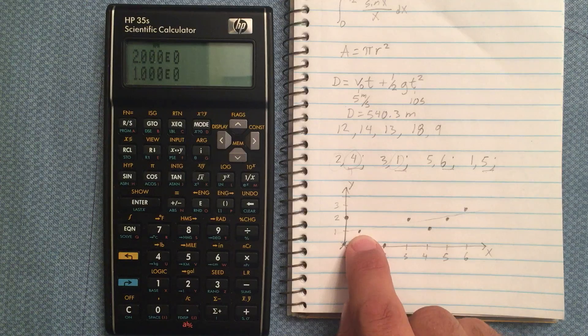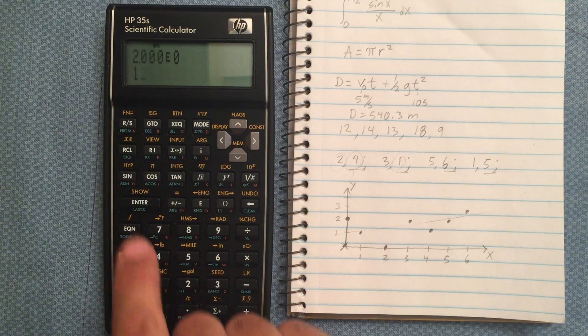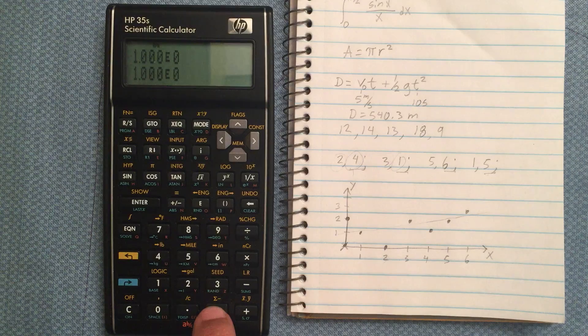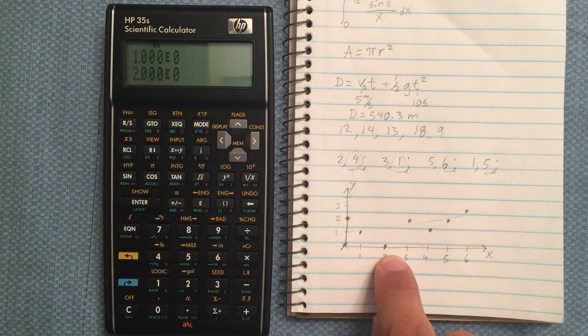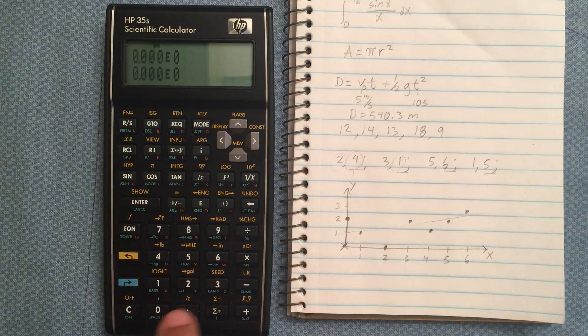This is y value of 1, x value of 1. I've got 1, 1. Enter. Y value of 0, x value of 2.